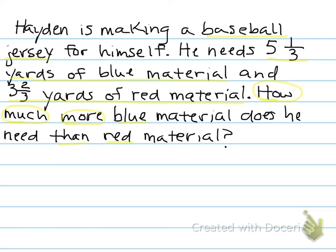So if I'm going to subtract 5⅓ blue material, take away 3⅔ red material — I can subtract my whole numbers, 5 minus 3 is 2, but look at those numerators. Can 1 take away 2? No, it can't. So you can either change them into improper fractions or use a number line.